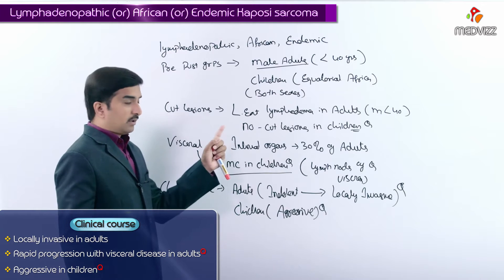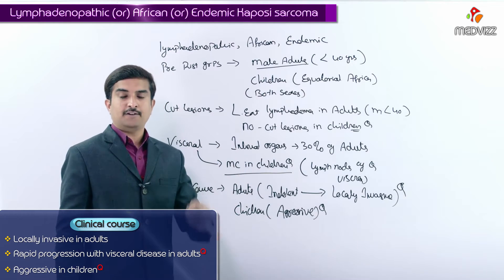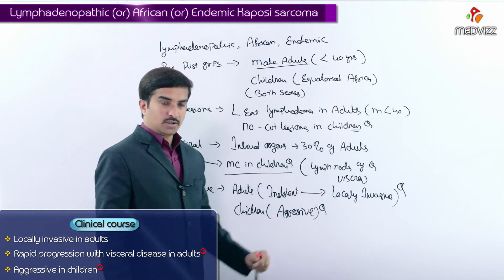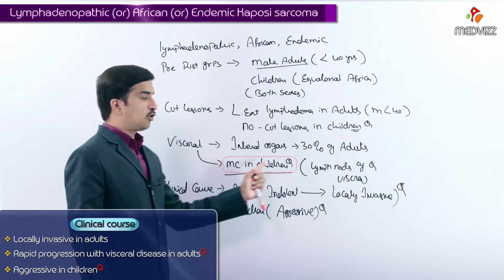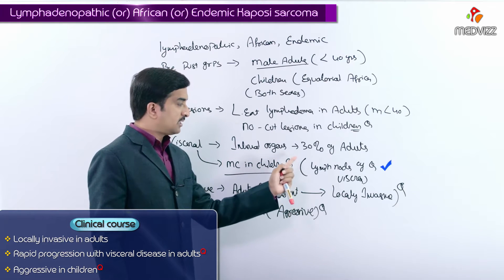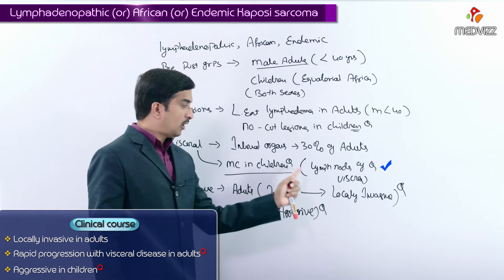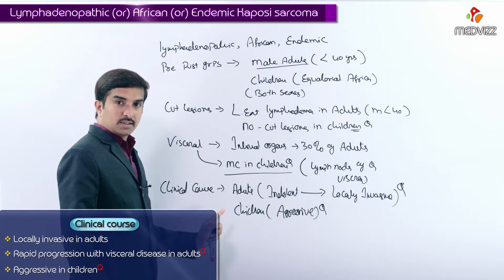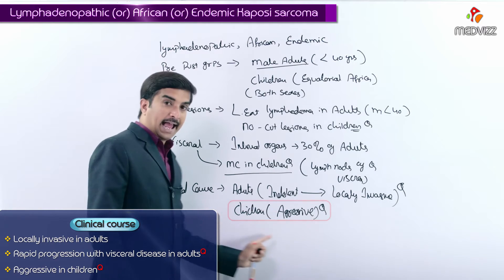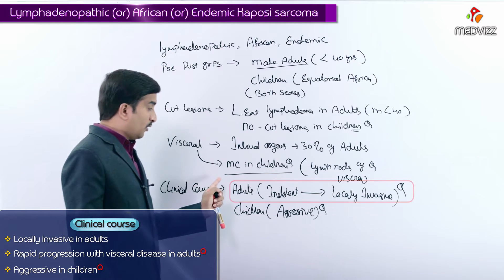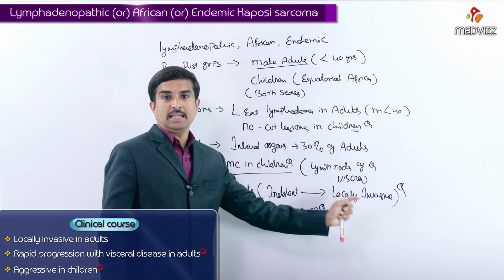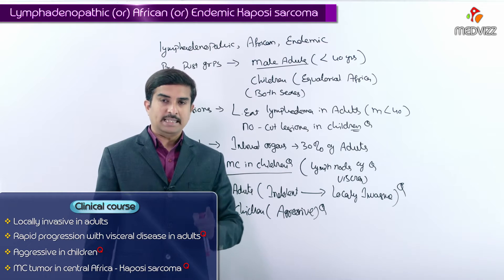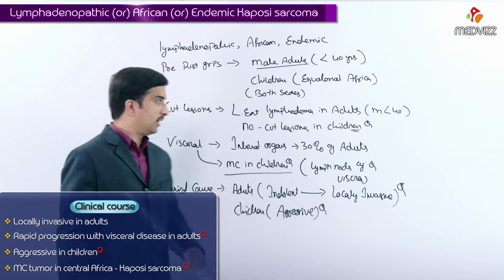In children, the disease is often aggressive — this is a very important MCQ point. For the African type, cutaneous lesions are absent in children, visceral involvement is more common in children involving lymph nodes and viscera, and the clinical course in children is often aggressive, whereas in adults it ranges from indolent to locally invasive.